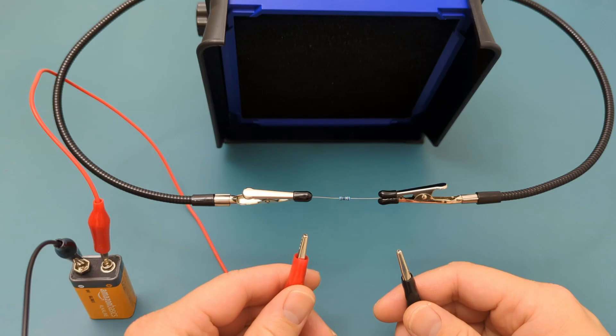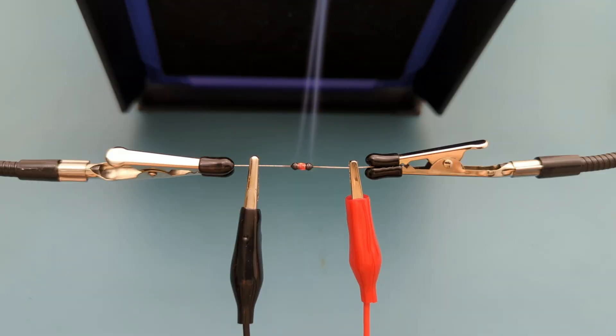We just asked a tiny one-quarter watt part to soak up more than 32 times its continuous rating. It functioned correctly. We turned it into a mini space heater.